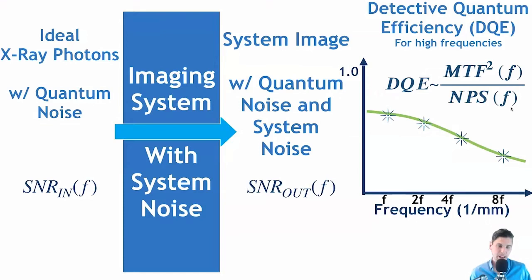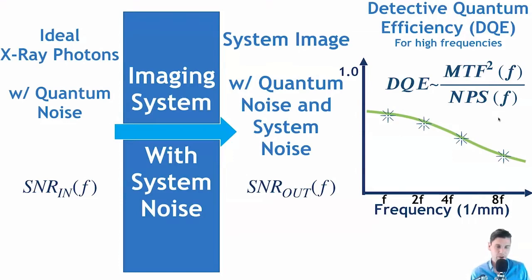The DQE can be expressed as a ratio of the MTF squared divided by the noise power spectrum — that is why we discussed those two quantities. If the system does less blurring as a function of different spatial frequencies, the DQE will reflect that positively. There are some other quantities involved, such as system gain, but MTF and noise power spectrum are both directly related to the DQE.